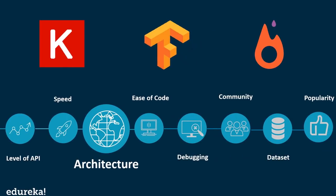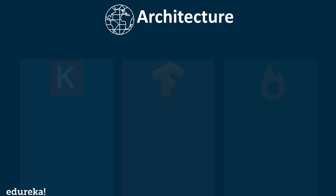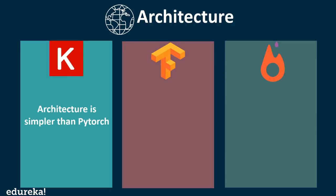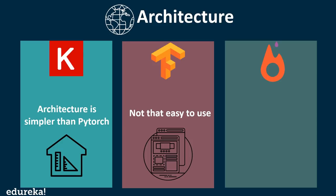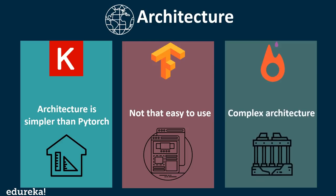The next parameter is architecture. Keras has a simple architecture that is more readable and concise, which is why most beginners prefer it over the other two. TensorFlow, on the other hand, is not very easy to use and has a complicated architecture that might not be helpful for beginners. PyTorch has a very complex architecture and its readability is less when compared to Keras.